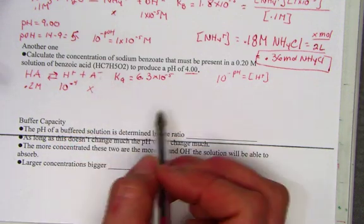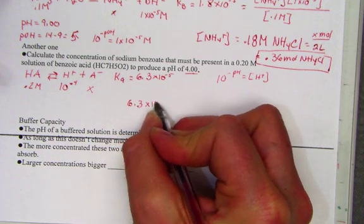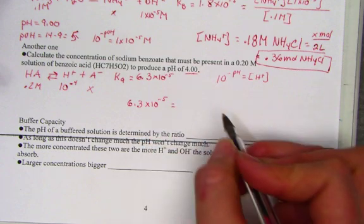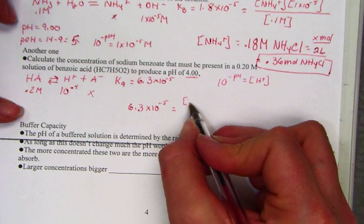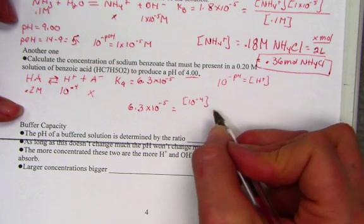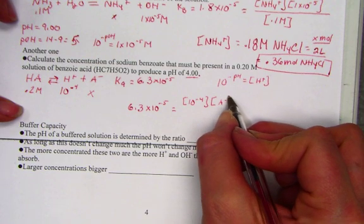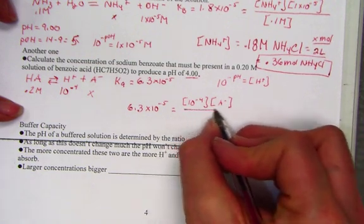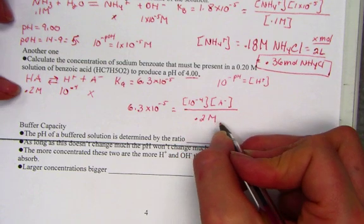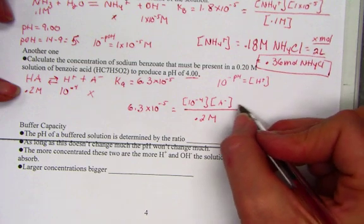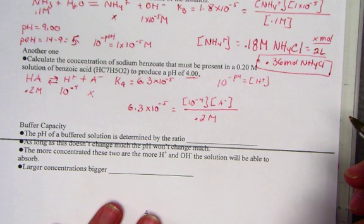Let's use our equilibrium to pull out the value of the A negative, the conjugate base of our acid. So 6.3 times 10 to the negative 5th, the value of our Ka, is set equal to the concentration of the hydrogen ion, which is 10 to the negative 4th, or 1 times 10 to the negative 4th, times the benzoate polyatomic ion. I'll just simply write as A negative, set over the concentration of 0.2, the original acid value.